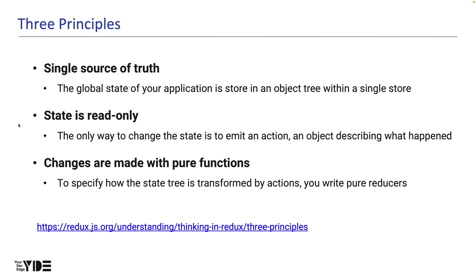Second, state is read-only. The only way you can change state is to emit an action — an object that describes what happened. Therefore, it is not possible to directly change the state in the view layer or in the network callback. Instead, we use actions to express our intention to change the state.